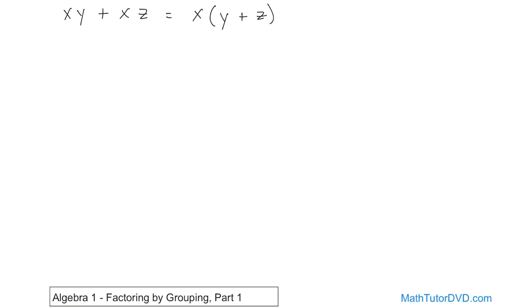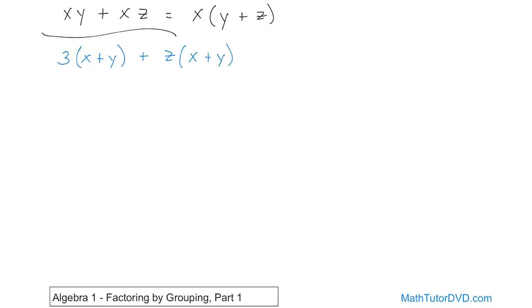We're just pulling out what's common. Now let's take it a step further and look at a problem where we'll actually have to do what we call grouping. What if you had three times the quantity x plus y, and then we add z times the quantity x plus y? I'm asking you to factor this.